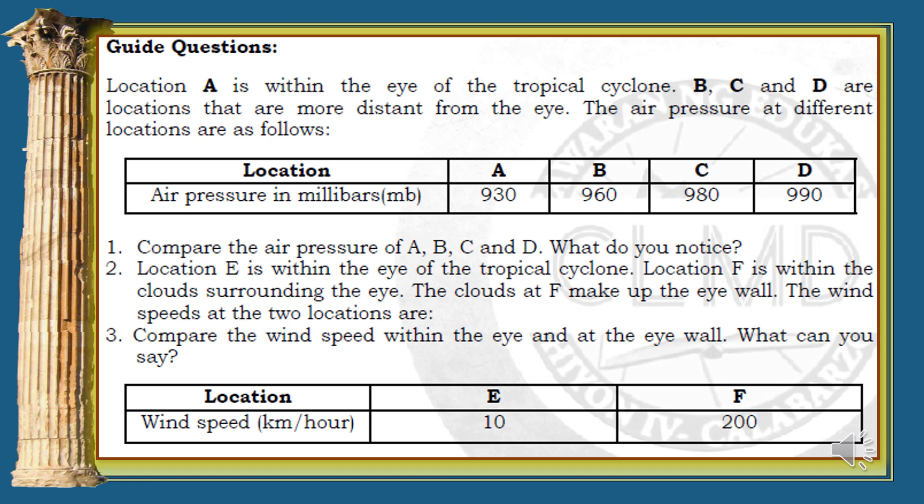Guide questions: Location A is within the eye of the tropical cyclone. B, C, and D are locations more distant from the eye. The air pressure at different locations are given. 1. Compare the air pressure of A, B, C, and D — what do you notice? 2. Location E is within the eye; Location F is within the clouds surrounding the eye, making up the eye wall. The wind speeds at the two locations are given. 3. Compare the wind speed within the eye and at the eye wall — what can you say?